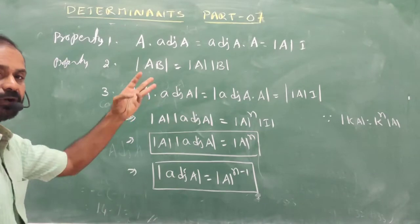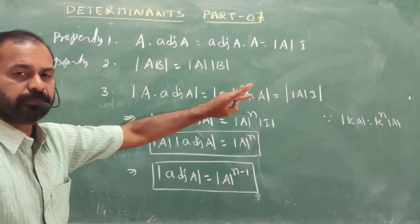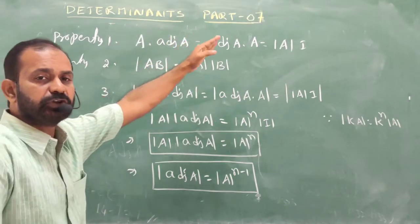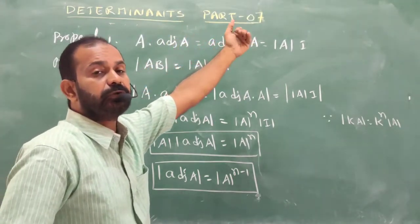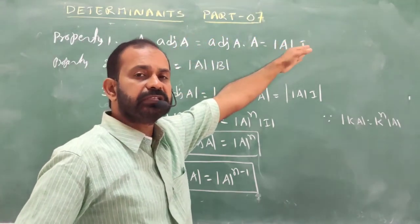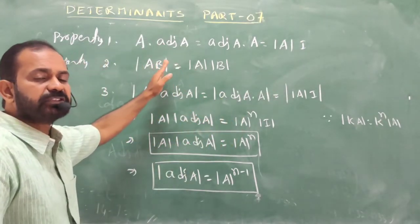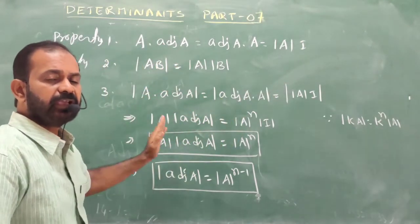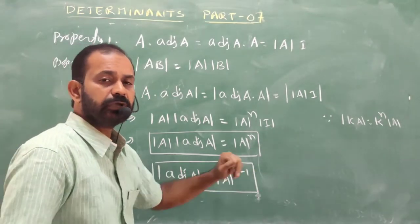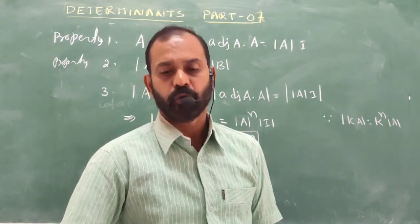So we have seen: cofactor matrix, adjoint matrix, and properties. A times adjoint A equals adjoint A times A equals |A| times I; det(AB) = |A|·|B|; and determinant of adjoint A equals |A|^(N-1).